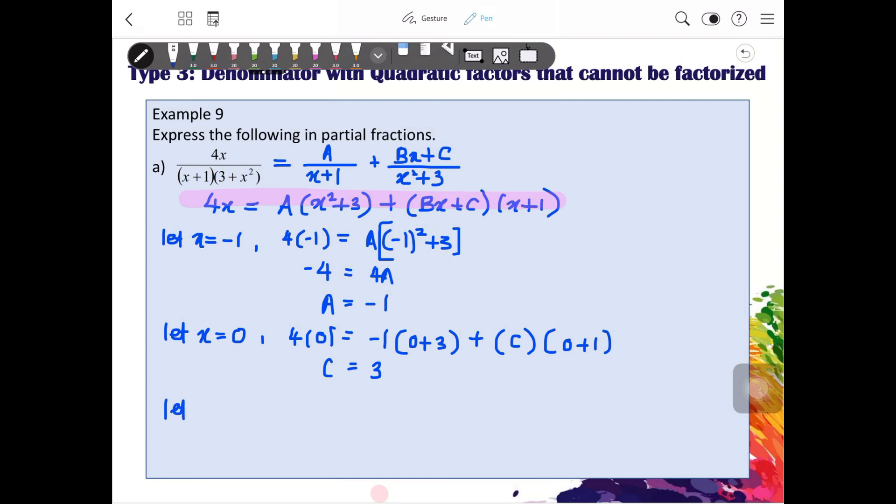Next value, I'm gonna let x equals to 1. So we will have 4 times 1 equals to A times negative 1, and then 1 squared is 1 plus 3.